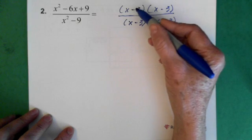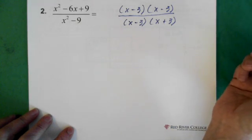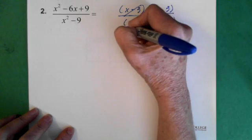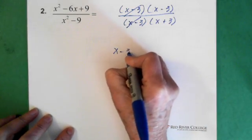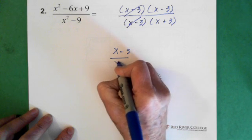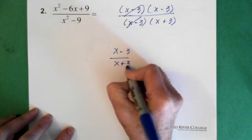Now, here you can see the x minus 3 divided by the x minus 3 become 1. So these two are gone. And we're left with x minus 3 over x plus 3. And that would be your answer.